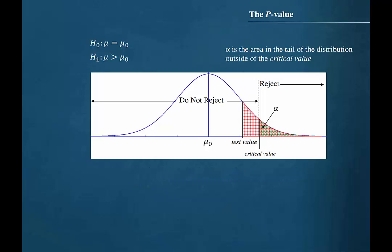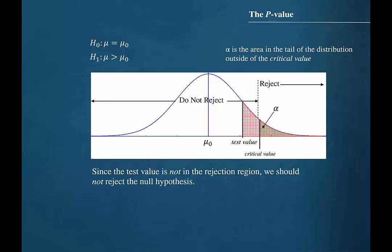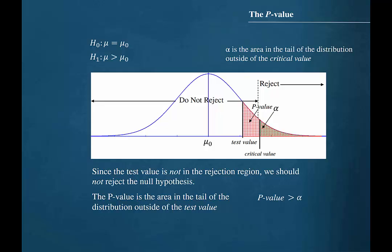Now let's look at the second case where the test value lands in the region where we do not reject the null hypothesis. Since the test value is not in the rejection region, we should not reject the null hypothesis. Remember that the p-value is the area in the tail of the distribution outside of the test value, so the p-value is the area under the curve shaded in red. Note that this area shaded in red is larger than the area shaded in green, so this time the p-value is greater than alpha.